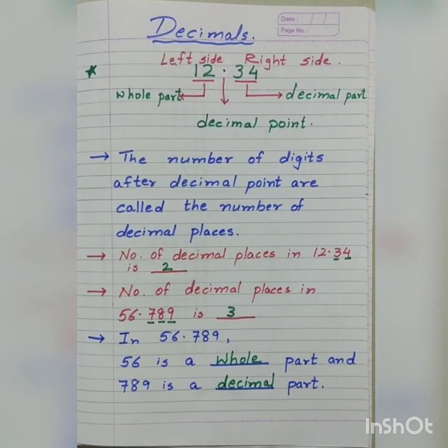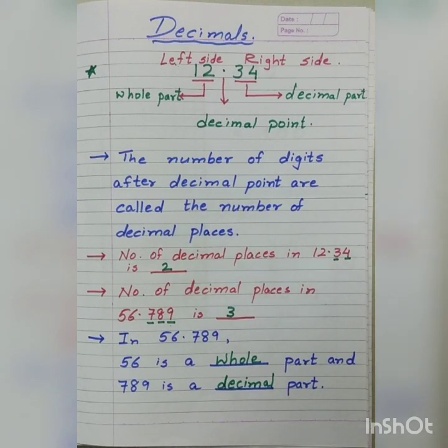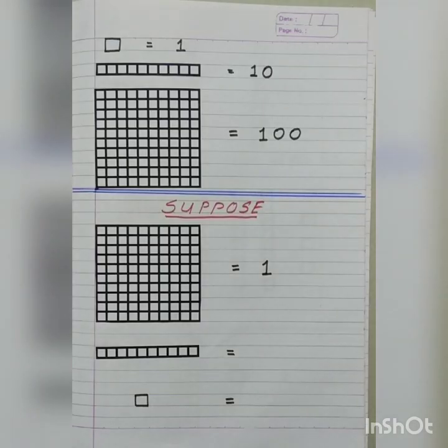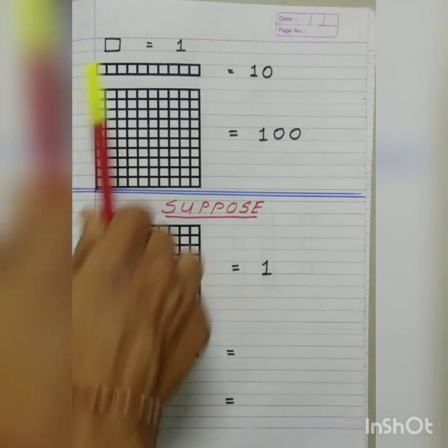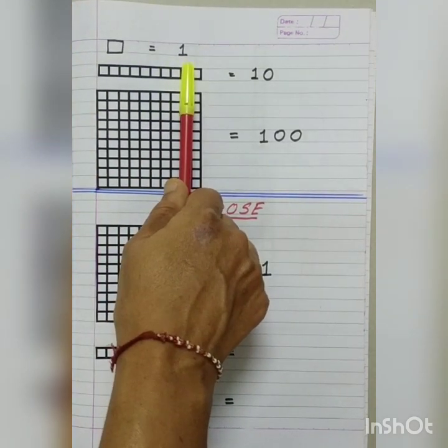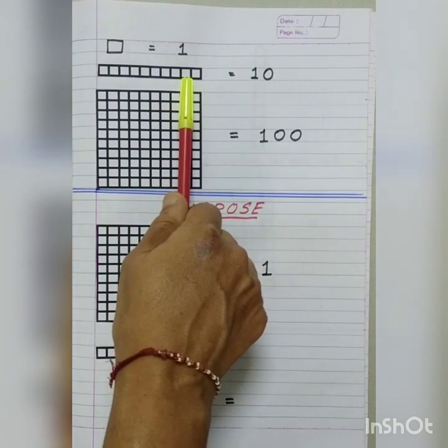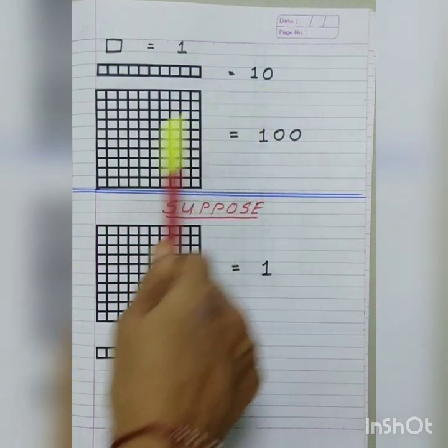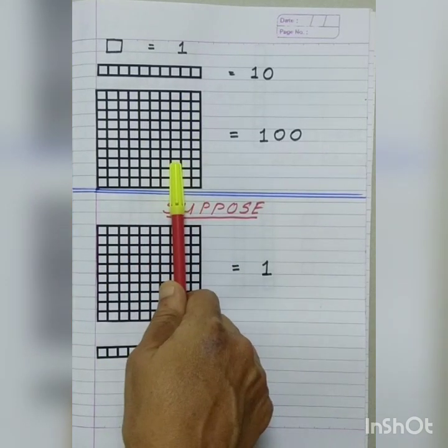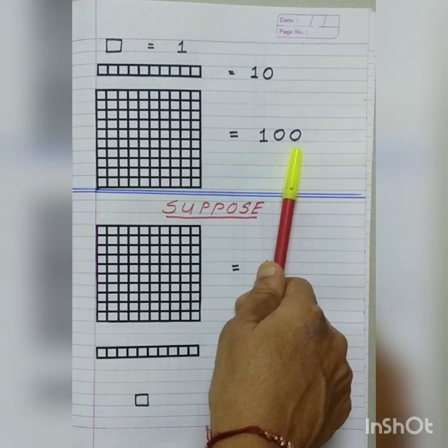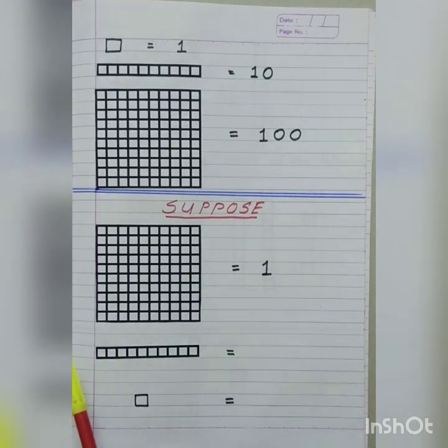Kids, are you feeling comfortable? Do you understand this? Now, let us go further. Students, you must have used this type of blocks in lower standard. At that time, we were treating 1 box is equal to 1, a grid of 10 boxes is equal to 10, and a grid of 100 boxes is equal to 100. Now, here it is not the same.